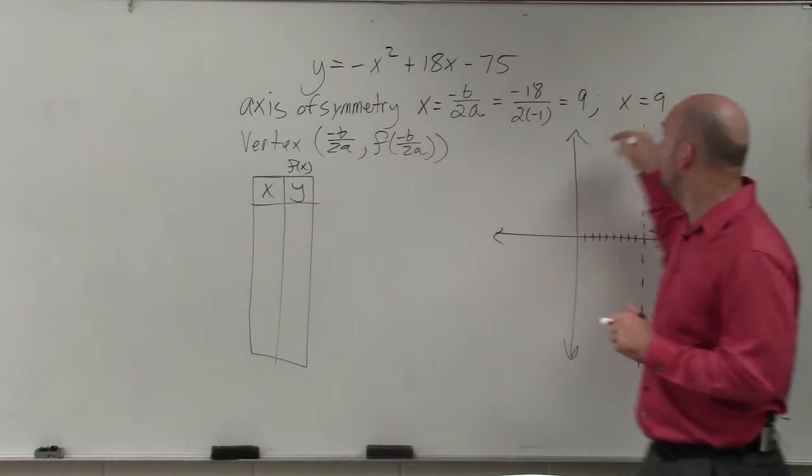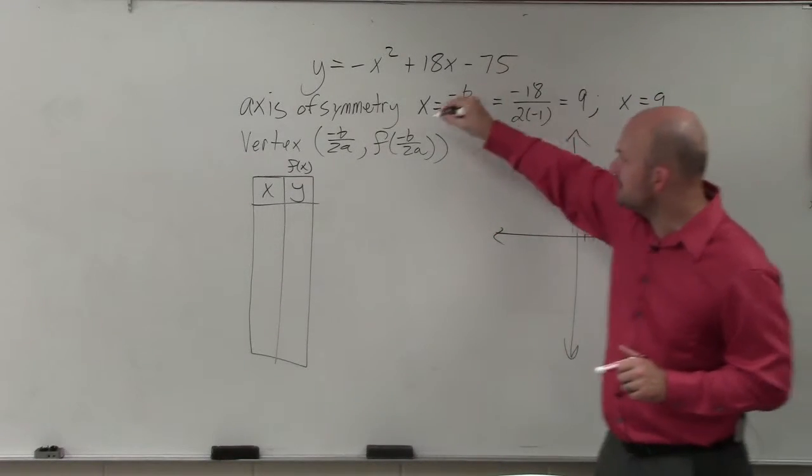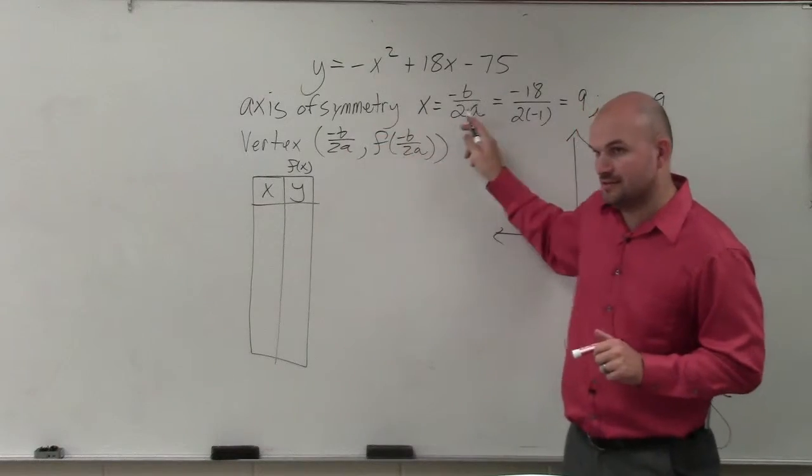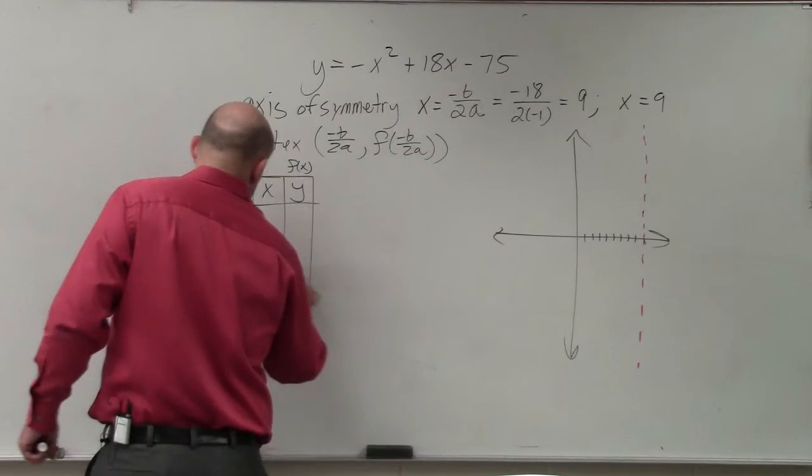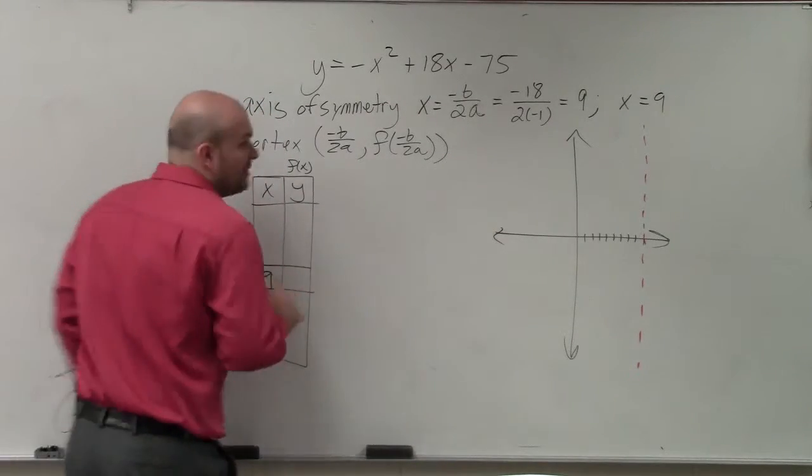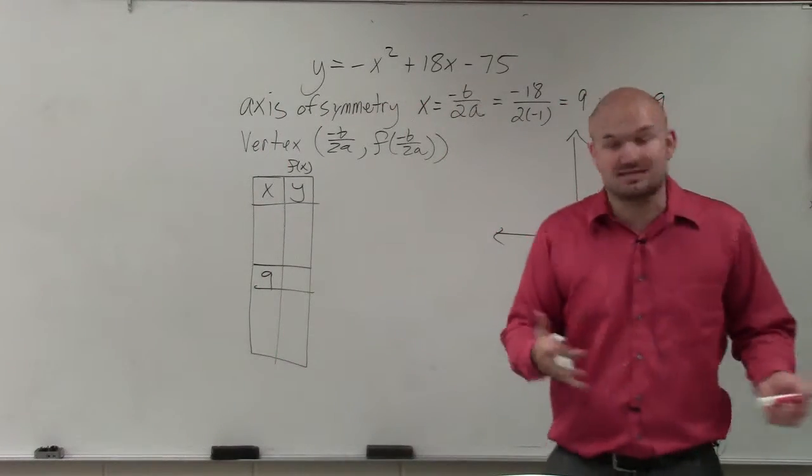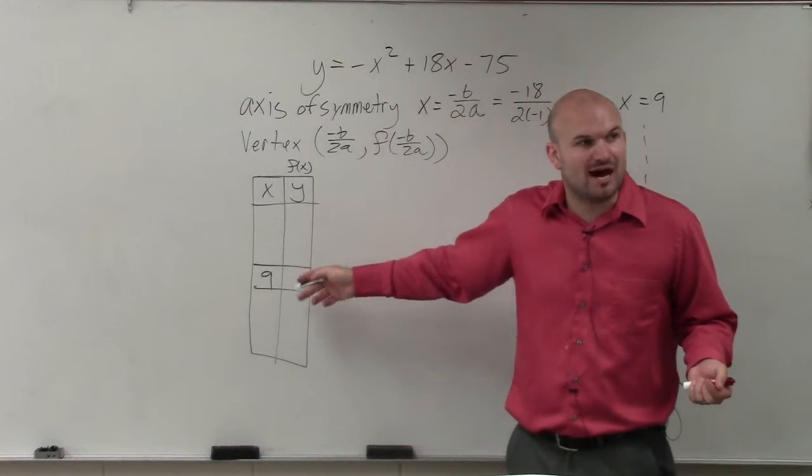So we know that x equals 9 is my axis of symmetry. That's going to be the same coordinates of the x coordinate of my vertex. So rather than looking at that f stuff, which I want you guys to understand, notice that f of x, which represents a function, would be the same output as the y. And I'll talk a little bit more about that in a second. However, if I know the x coordinate, right? Do you guys see how that is right there?